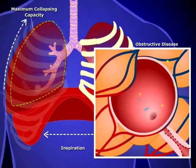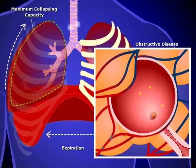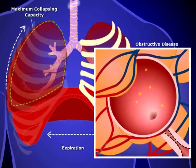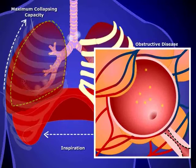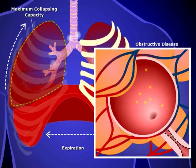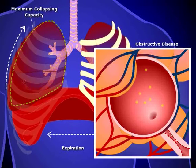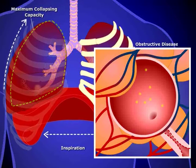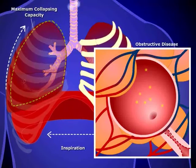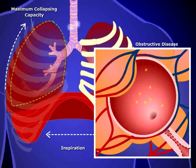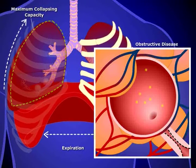Obstructive disease can also affect normal lung function. Airway resistance is represented here by dotted blue lines in the lower right. In obstructive pulmonary diseases, such as emphysema or chronic bronchitis, airway resistance is increased. This means that the lungs cannot fully deflate. Without proper deflation, the lungs cannot fully experience a corresponding increase in pressure to cause air to flow out of the lungs. As a result, patients with obstructive pulmonary disease have difficulties with expiration.